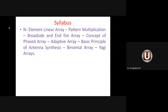Under Unit 2, we have two important topics: broadside array and end-fire array — similar to Unit 1's two derivations. Any one of broadside or end-fire array will have the highest probability in the examination. We started with antenna array because a single antenna element has poor gain and directivity.